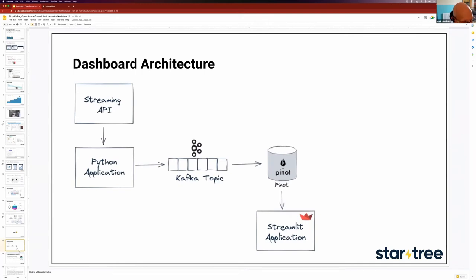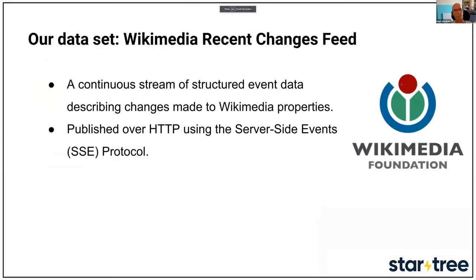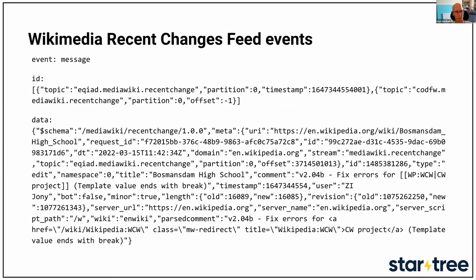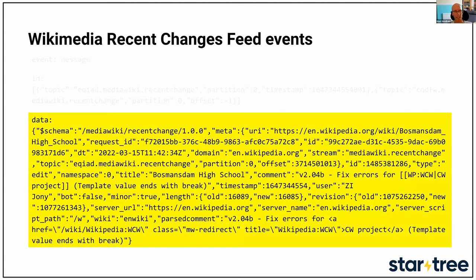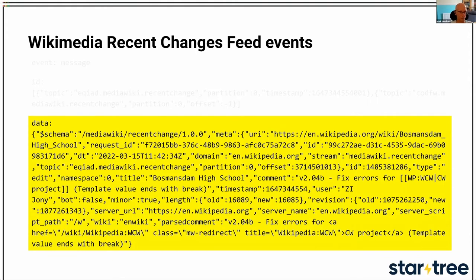We're going to build a real-time analytics dashboard — an example of a user-facing or BI tool. The architecture: a streaming API is processed using Python, messages are published to Kafka, Pinot consumes messages from Kafka, and we visualize and query that data via Streamlit. The dataset is the Wikimedia recent changes feed — a continuous stream of all changes being made on Wikimedia, including page updates and metadata changes, published over an HTTP endpoint using the server-side events protocol.